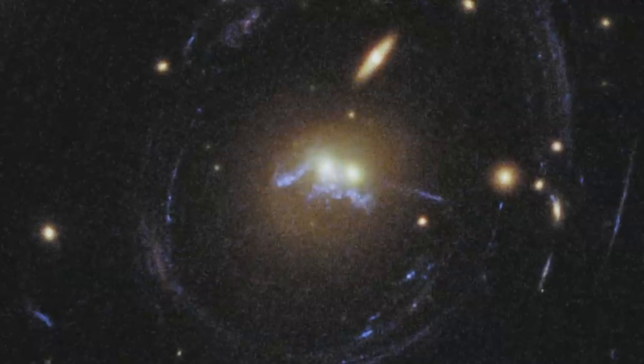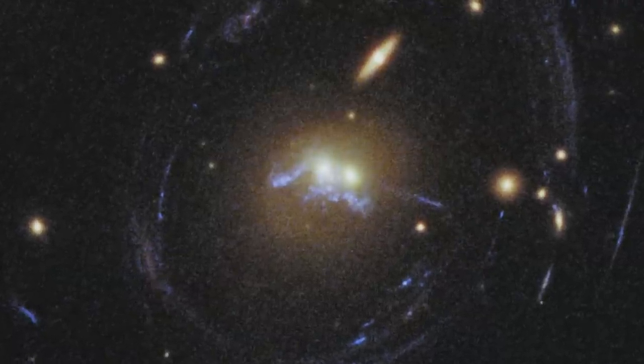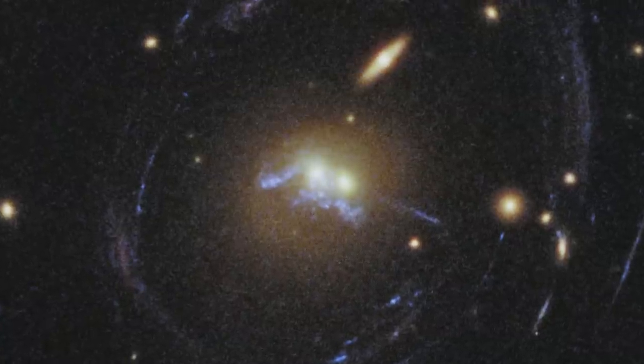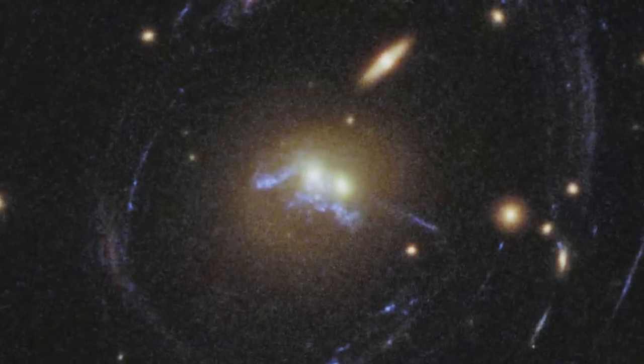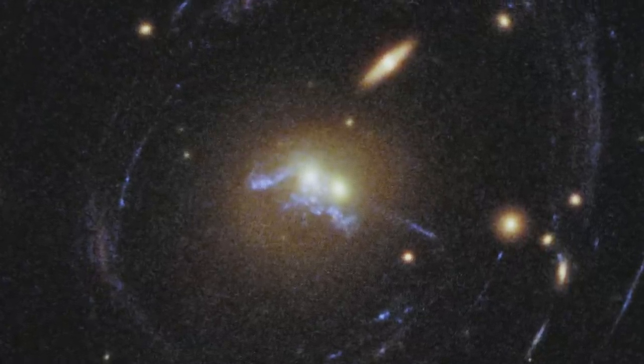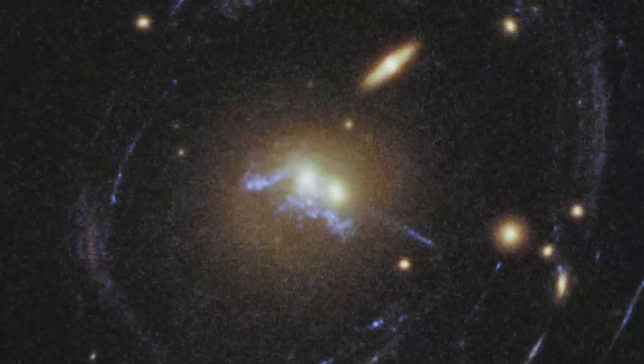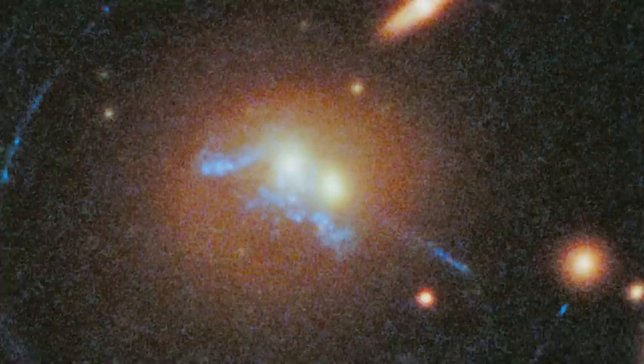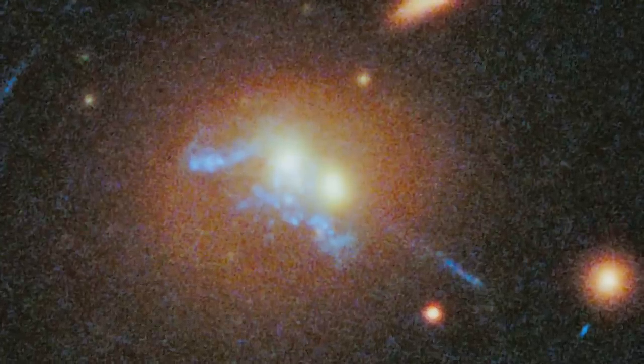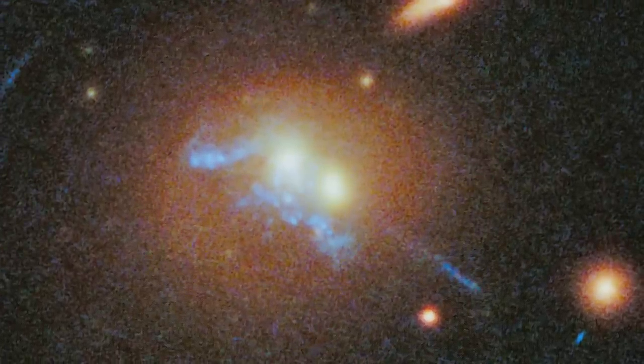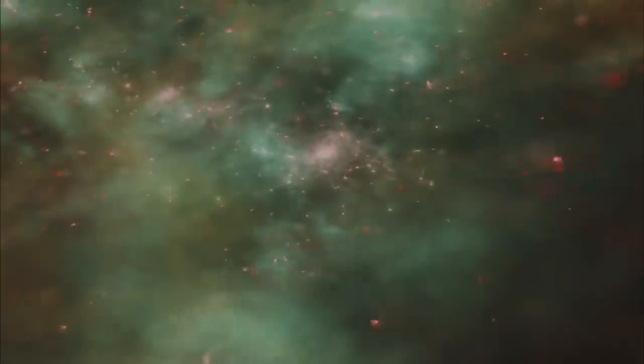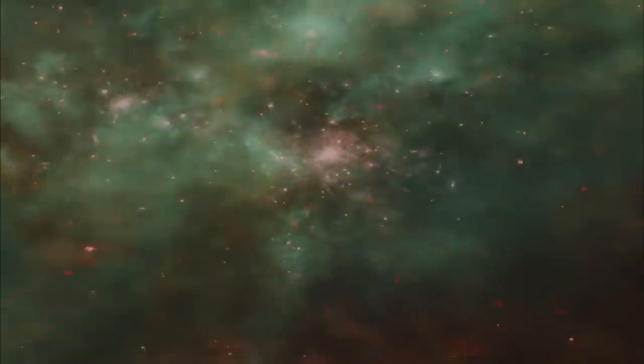These infant stellar superclusters have formed through a process called beads-on-a-string star formation, which has left them in even clumps strung out on a long gaseous filament. The clumps of stellar infants are visible here as a speckling of bright blue dots. Nineteen compact clumps are woven together with narrow filaments of hydrogen gas.